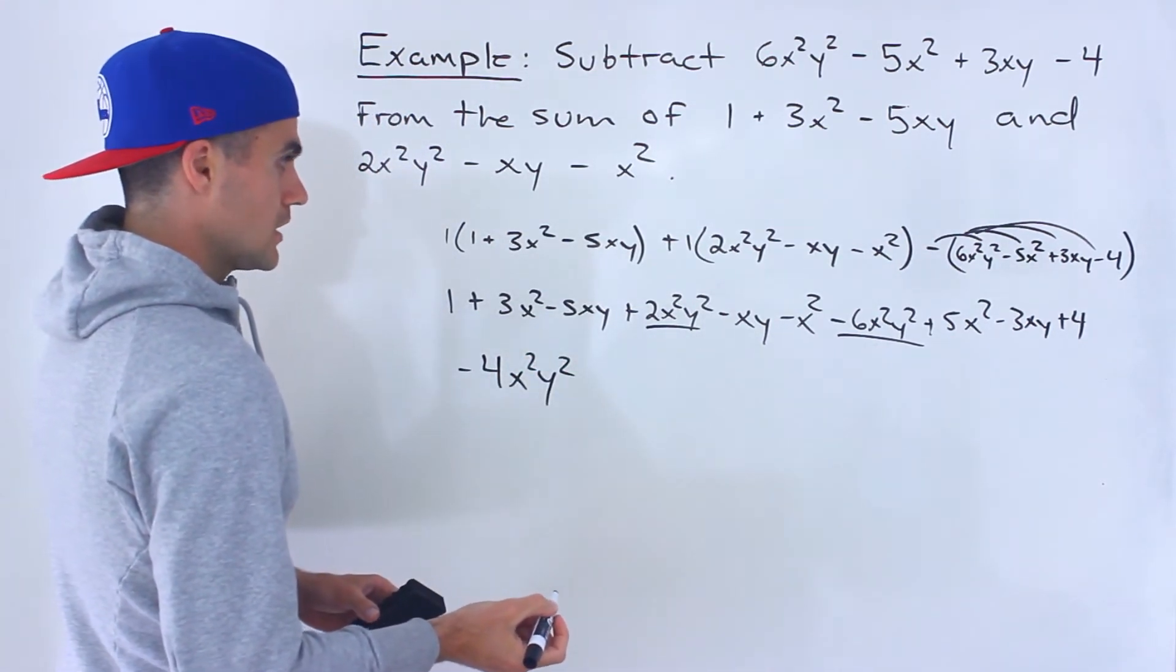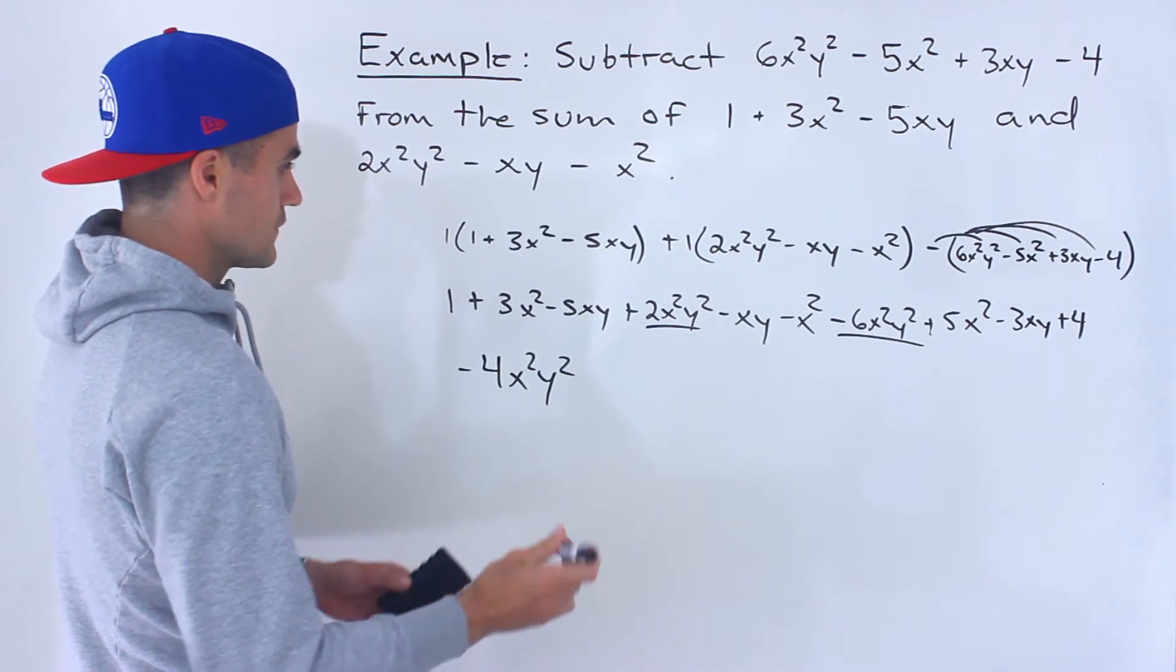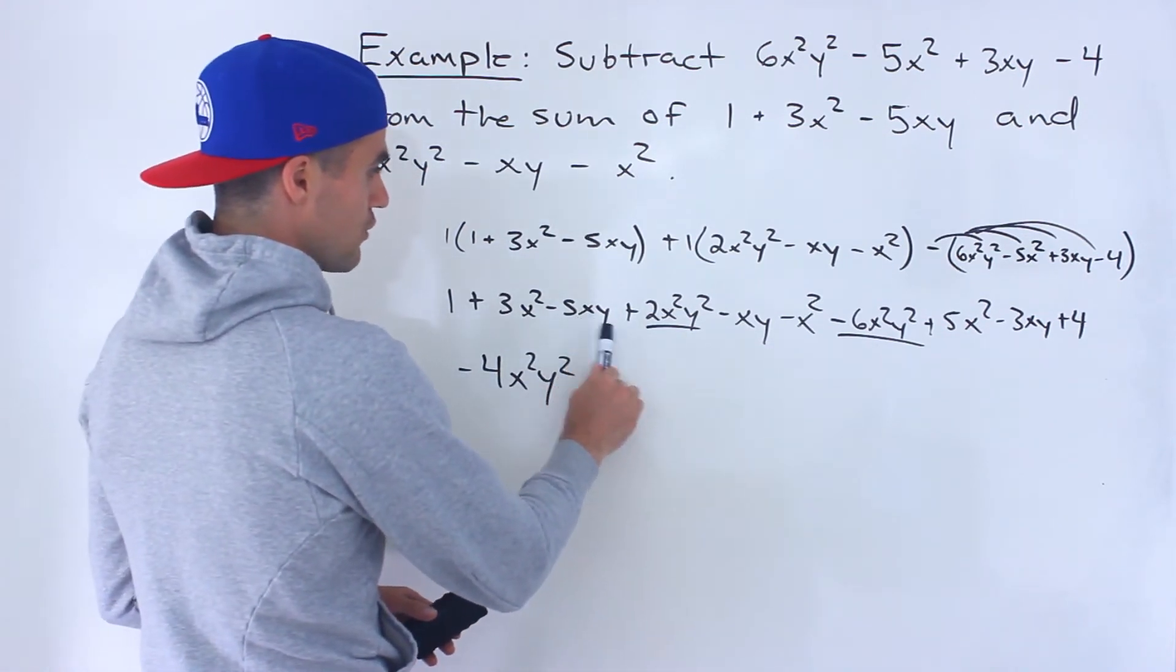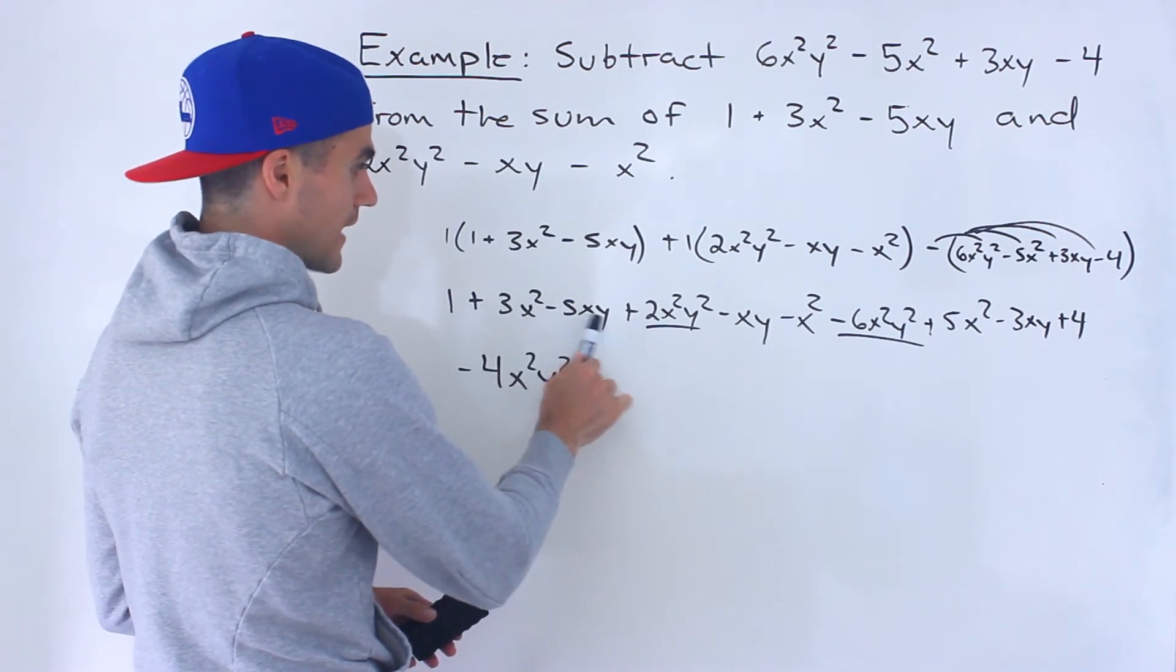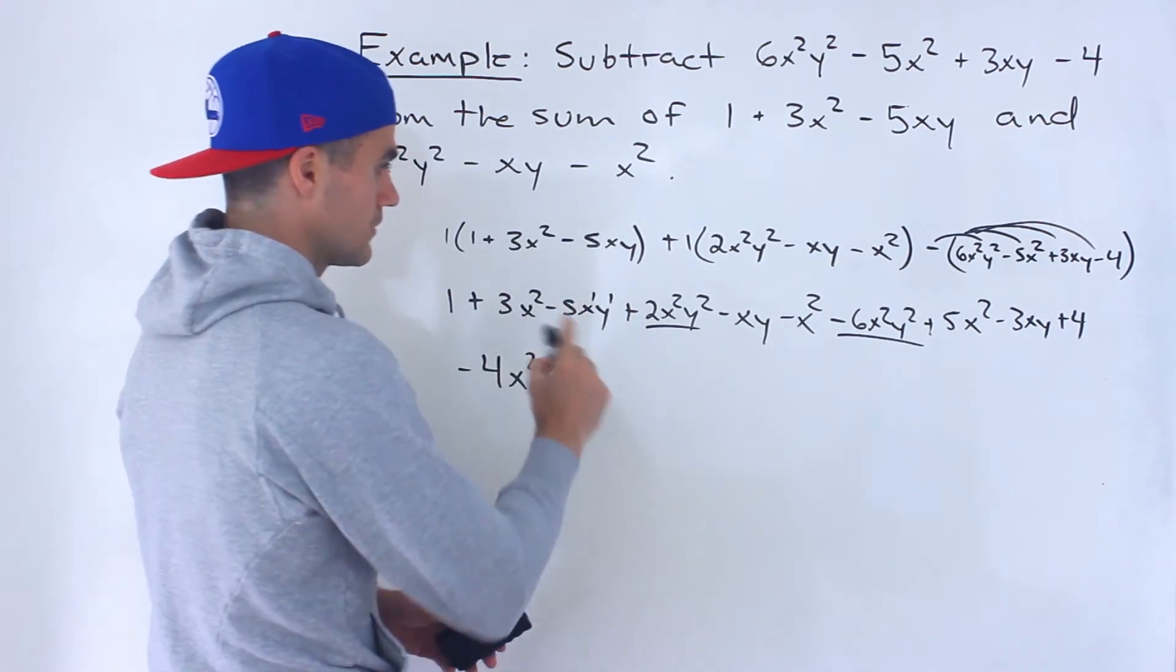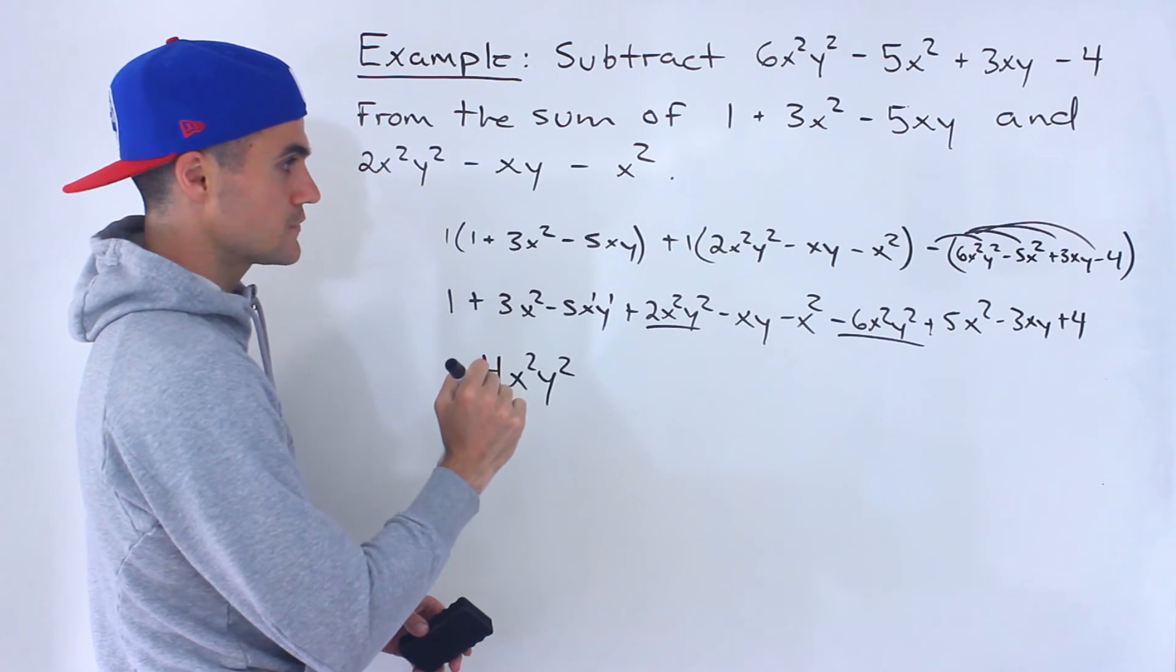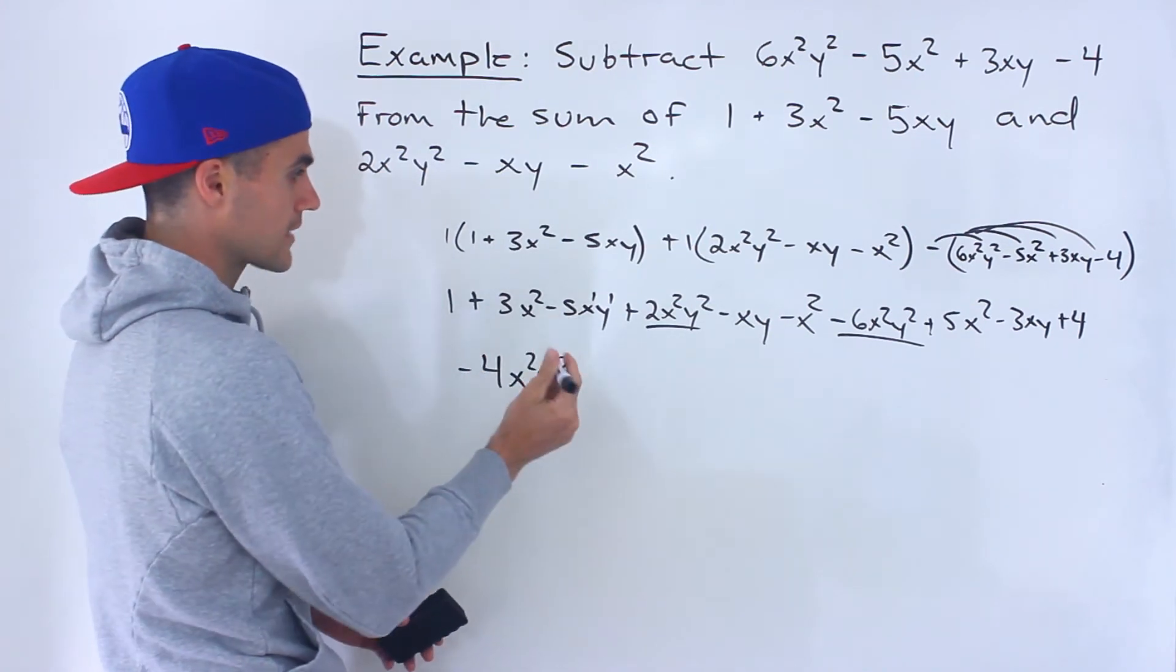And then the next one is a degree of 2. There's actually a degree of 2 with this and this. The x² has a degree of 2 and the xy because it's the one 1 here and you sum them up, it has a degree of 2. So we're going to pick either one. I'm going to go with the xy first.